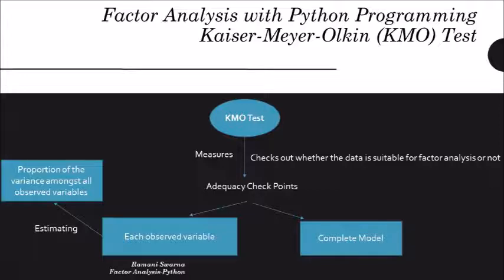So these are the two adequacy checkpoints which are present. Now, if you are observing the variable, then you should know that this is basically estimating. And what are we trying to estimate? We are trying to estimate the proportion of the variance that is present between all the observed variables. That means you need to check out for the variance to see whether it is present or not.